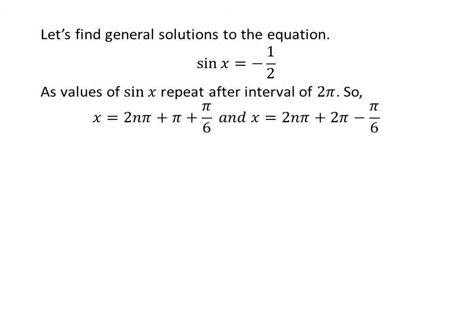Let us find the general solutions. Since the values of sine of x repeat after an interval of 2 times pi, the general solutions are 2 times n times pi plus pi plus pi upon 6, and 2 times n times pi plus 2 times pi minus pi upon 6, where n is an integer.